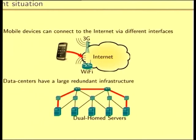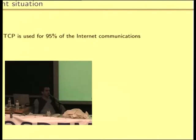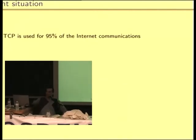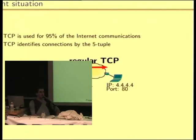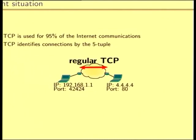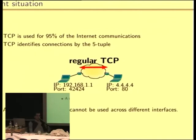So why is this happening? It is because TCP is used for 95% of the communications over the internet. And TCP identifies a connection by the so-called five-tuple. Every host has an IP address when connecting to a network, and TCP also uses port numbers — source IP, destination IP, source port, and destination port. And as an IP address is attached to an interface, you cannot use TCP across multiple interfaces.